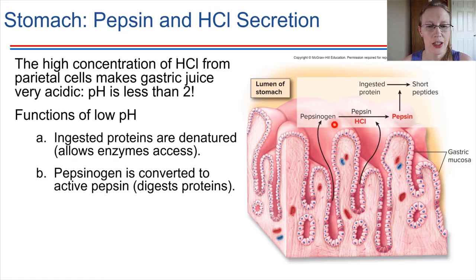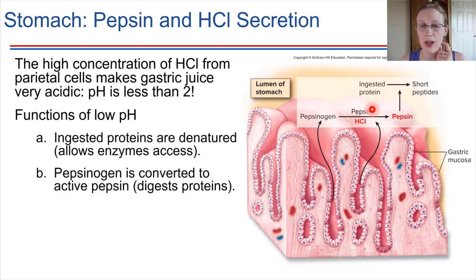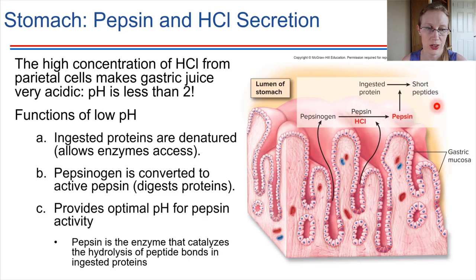What happens is pepsinogen molecules actually act on each other — they partially digest each other. As a result, they end up cleaving off small inhibitory fragments. The net result is that the pepsin enzyme is now in its fully active form. In low pH, pepsinogen acts on others like itself to form the active form of pepsin, which can then initiate digestion of proteins. So that low pH is key for allowing protein digestion to start.